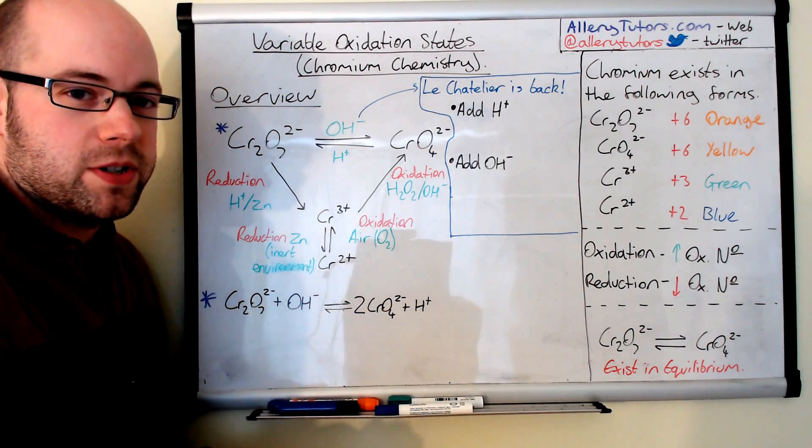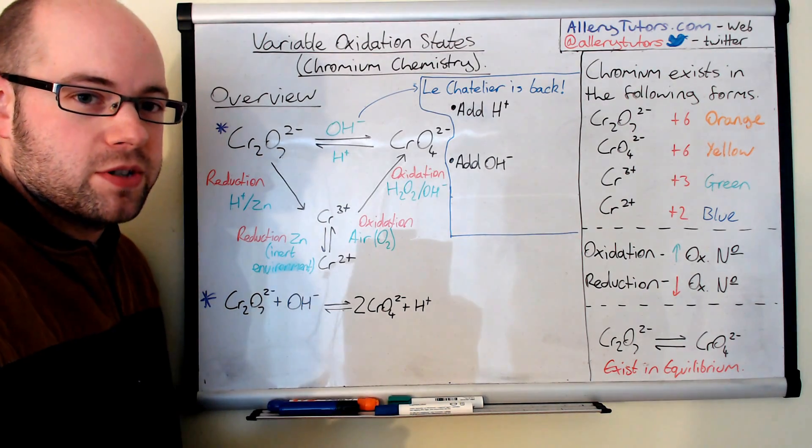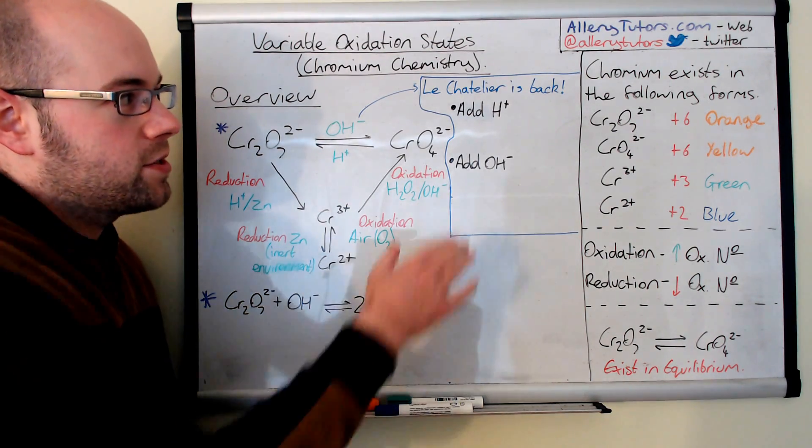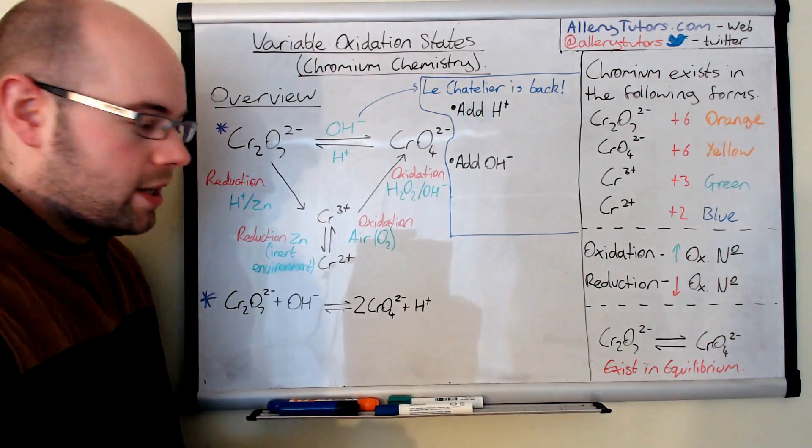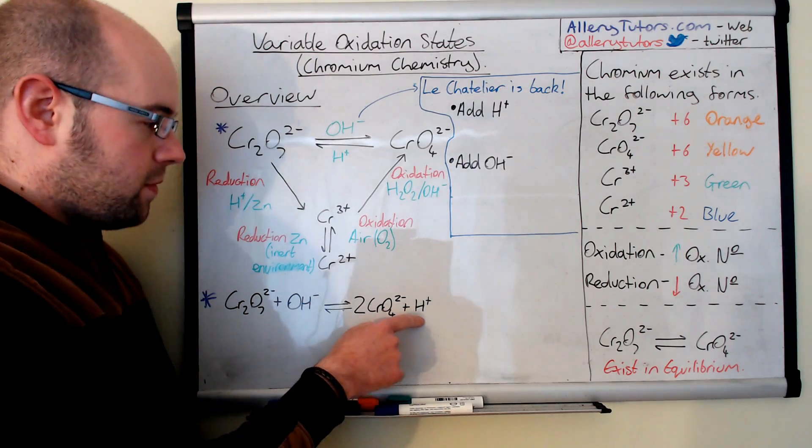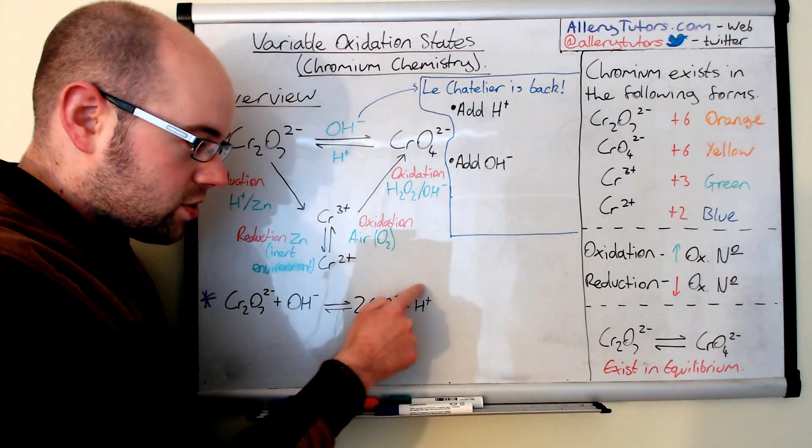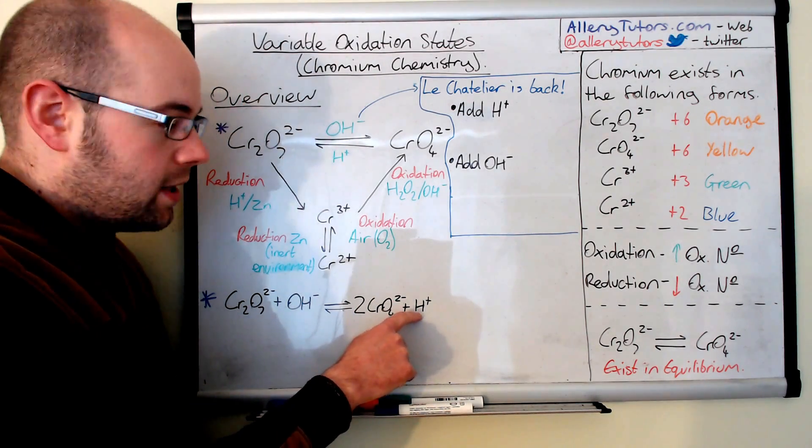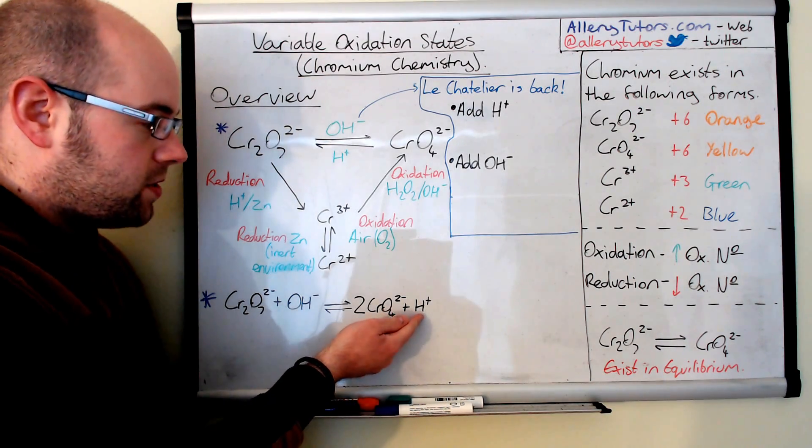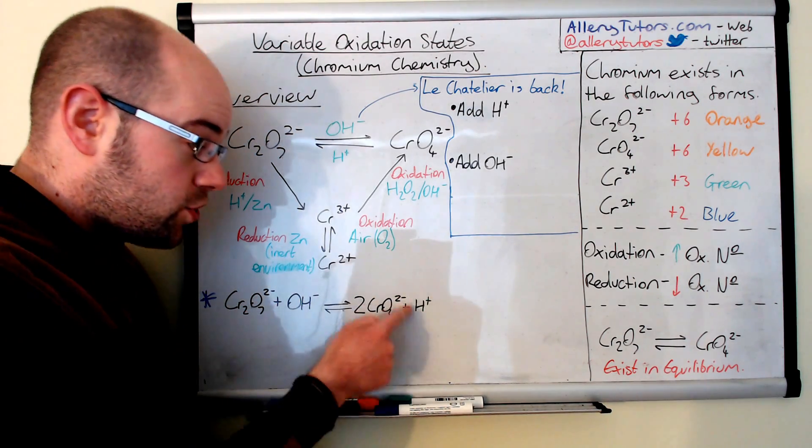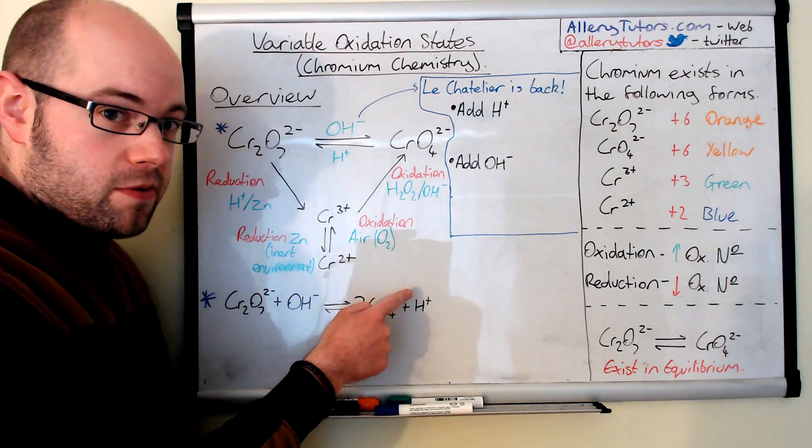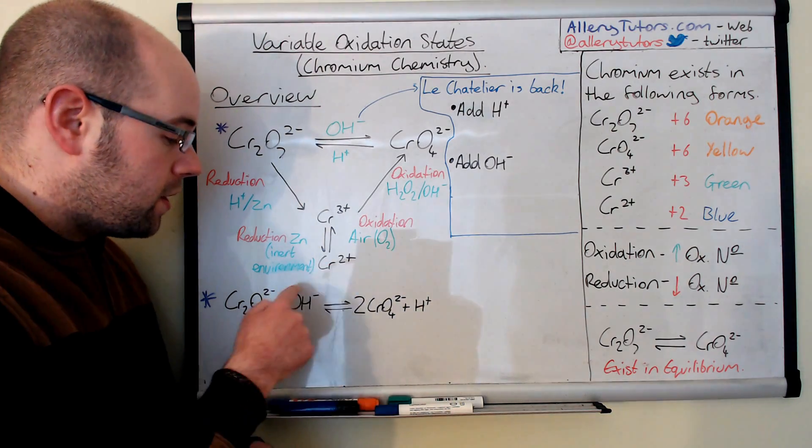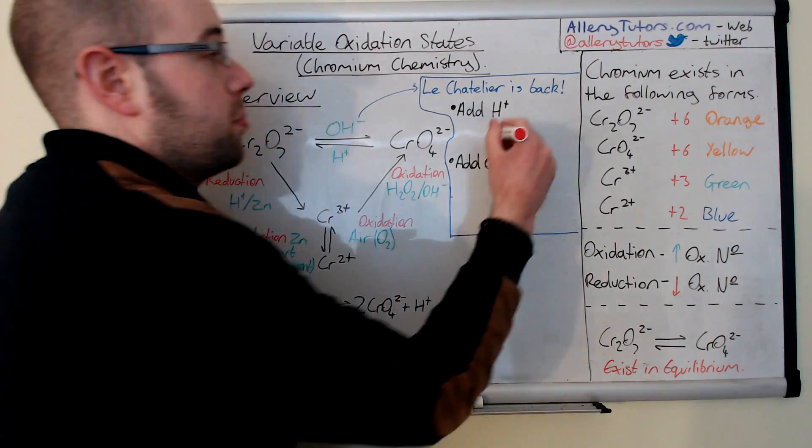the reaction will try to do the opposite and try to reduce the effect of that change. So if we add a H⁺ ion to this, then effectively what happens is we increase the concentration of this, because we've added more of this, and the reaction will naturally shift to the left to reduce the amount of H⁺ ions that are in the system. And so therefore, equilibrium will shift to the left.